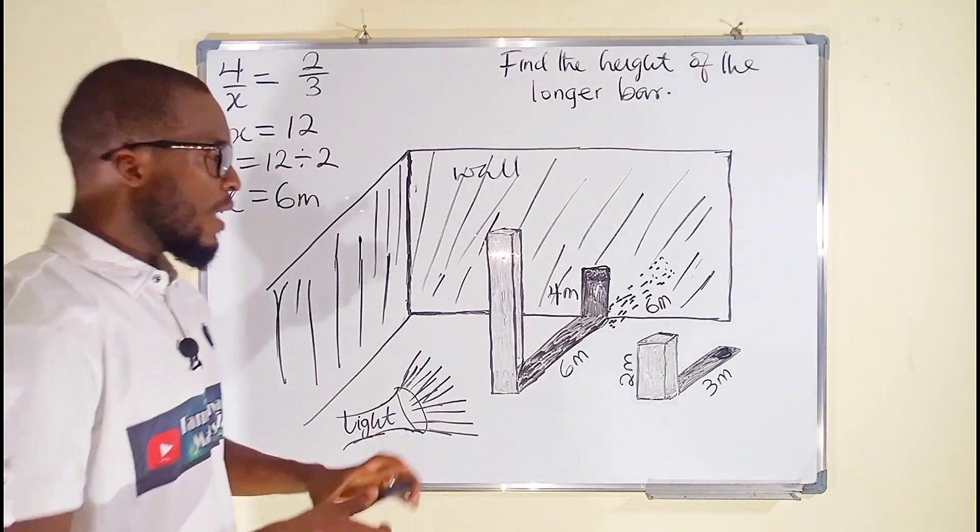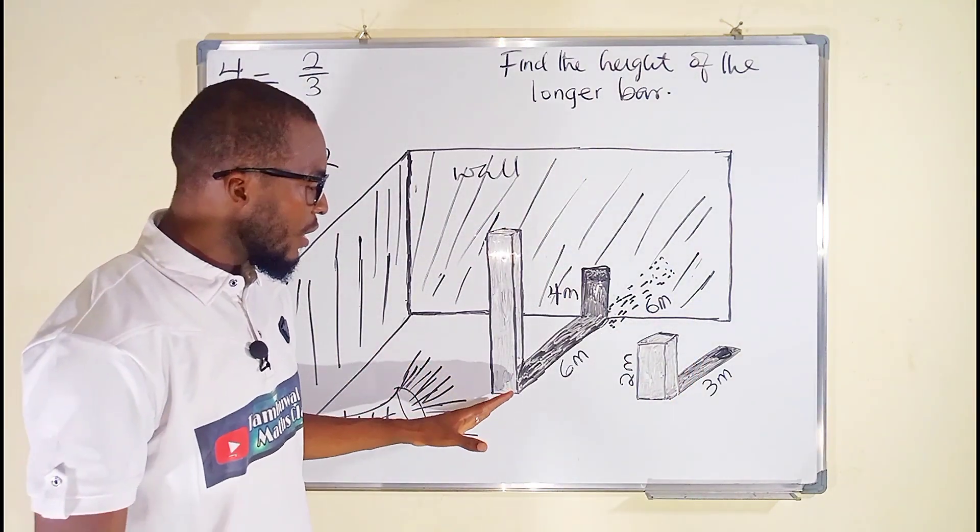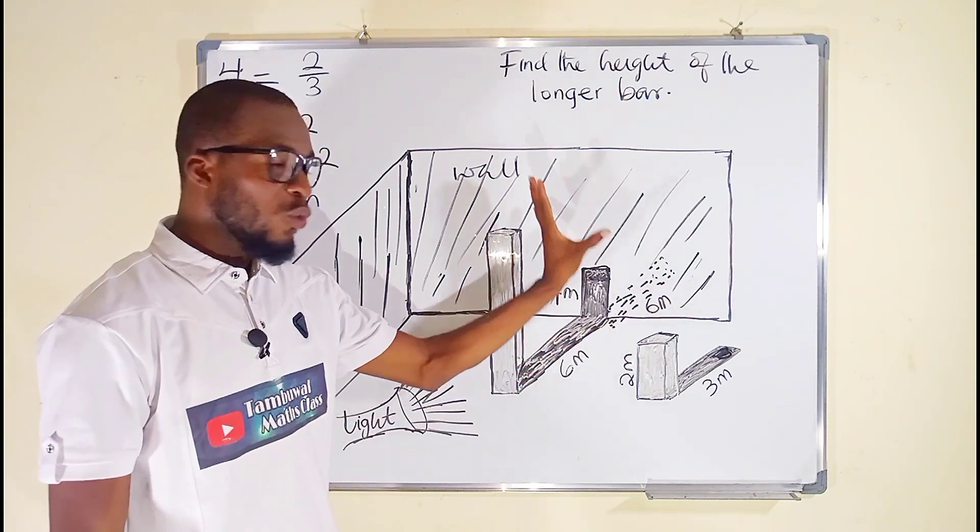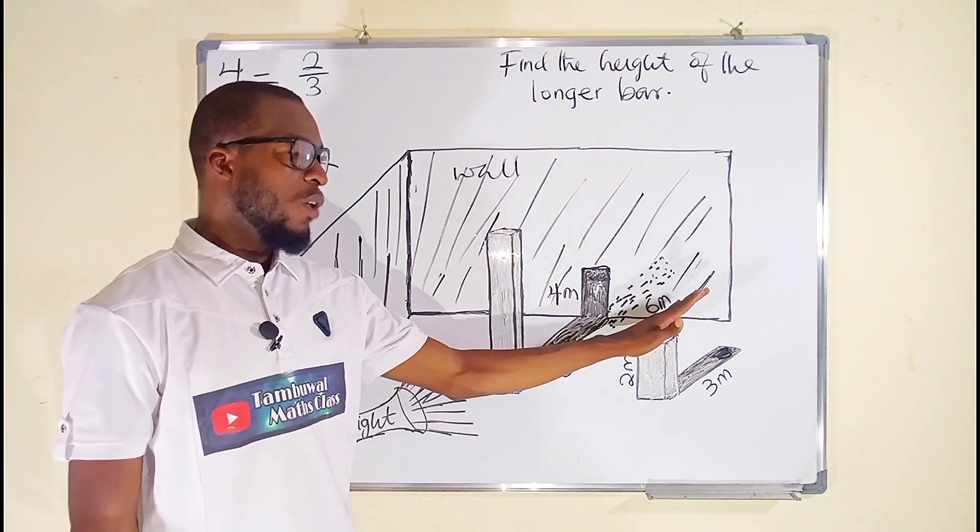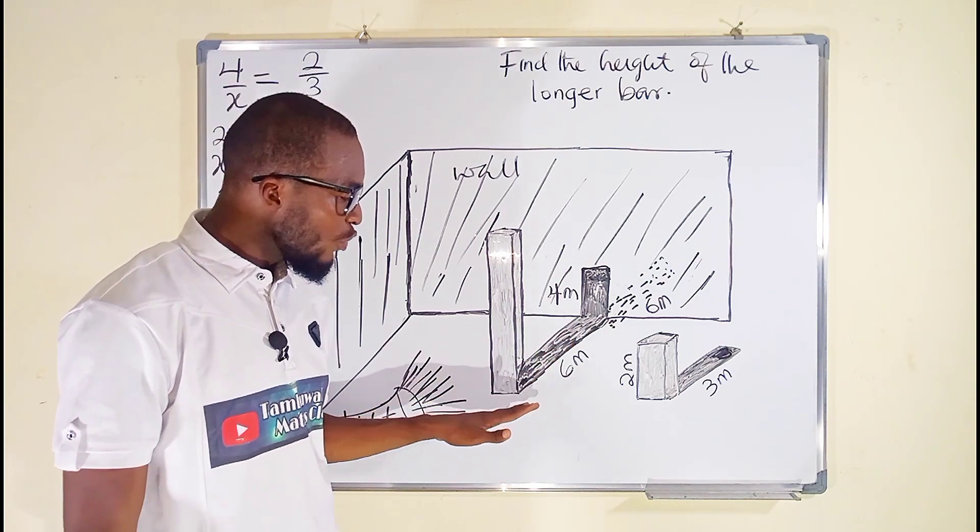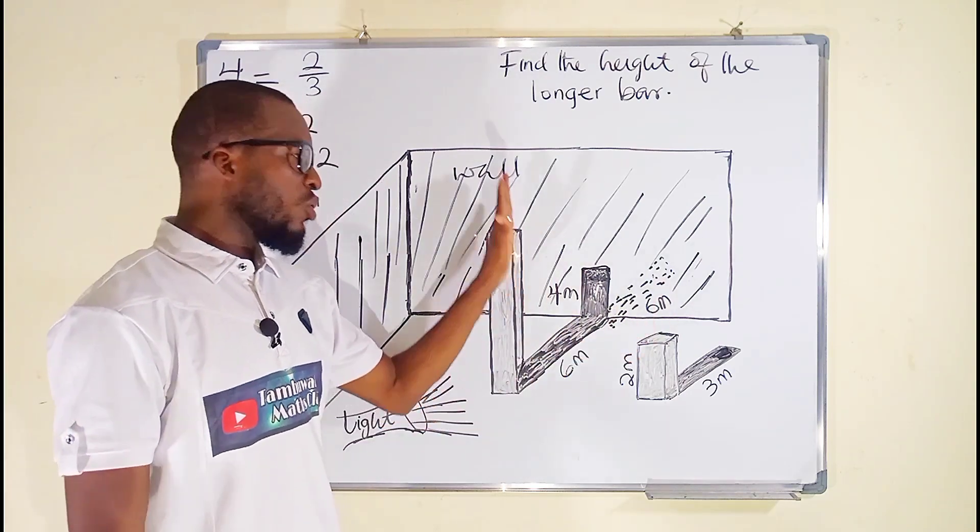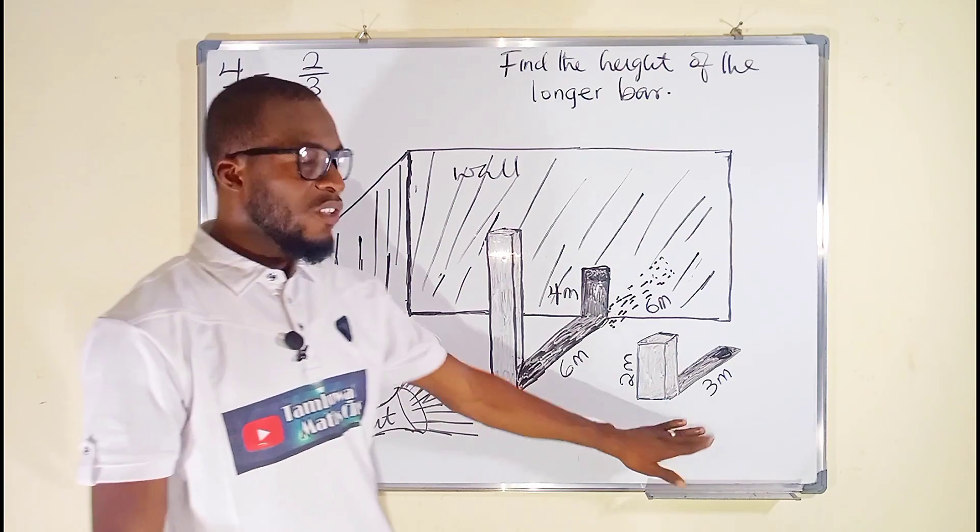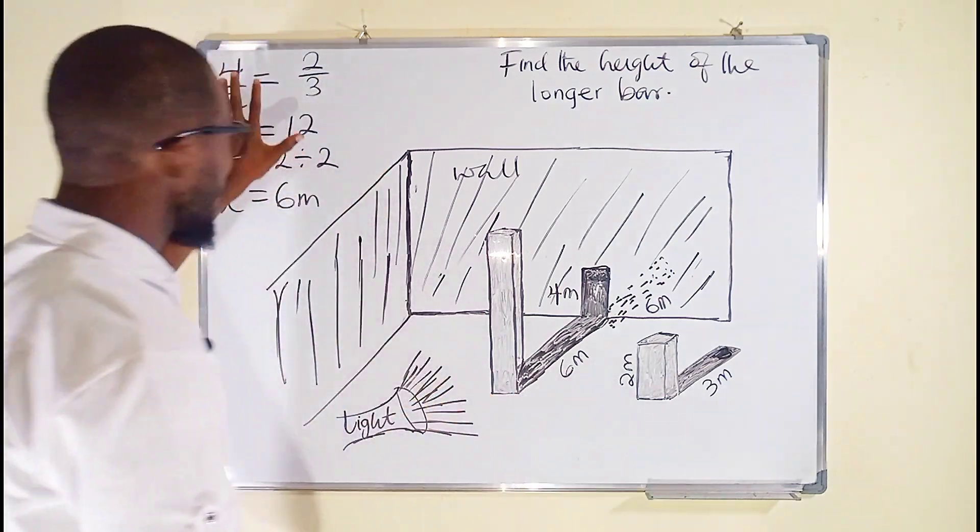So what do we do next? Now since we know that the length of this shadow, suppose the wall is absent, is going to be equal to 12, we can now relate the ratio of the length of this shadow to the height of the bar to this one as well. So let me clean this one.